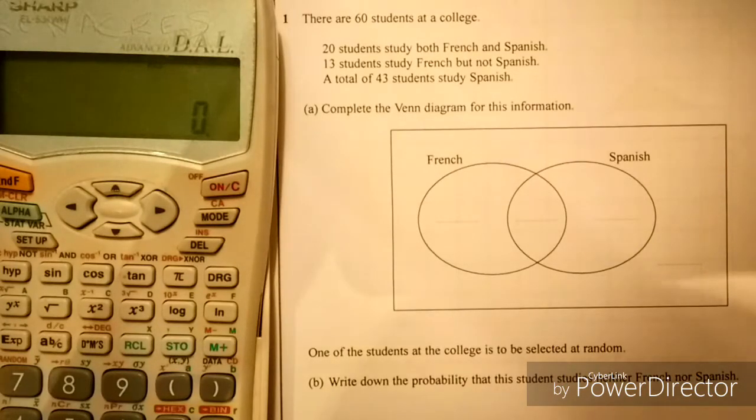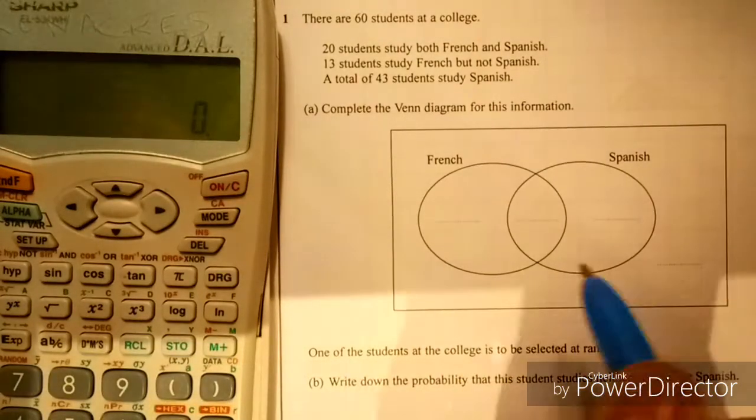Okay, this first calculator question: there are 60 students in the college. 20 students study both French and Spanish. 13 study French but not Spanish. A total of 43 study Spanish. Complete the Venn diagram. Let's fill in the easiest bit.